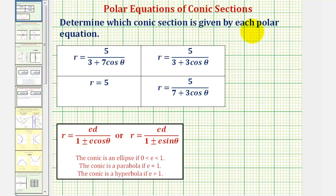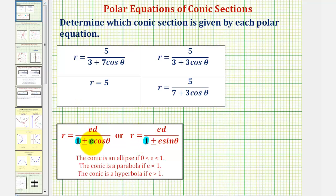We want to determine which conic section is given by each polar equation. For three of these, we'll write them in one of two standard forms where the denominator is written as one plus or minus e cosine theta, or one plus or minus e sine theta. The coefficient of cosine theta or sine theta is equal to the eccentricity.